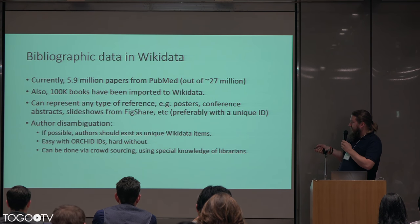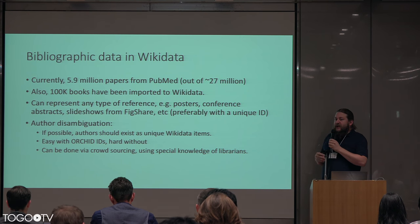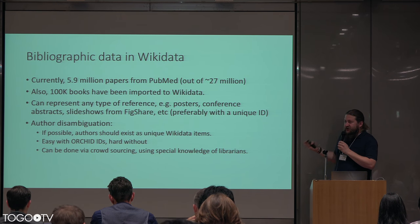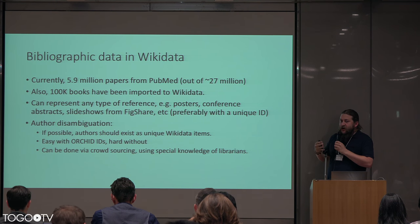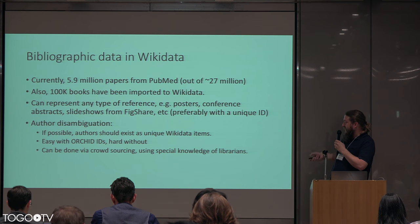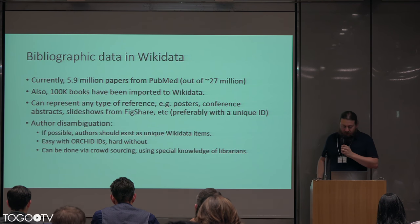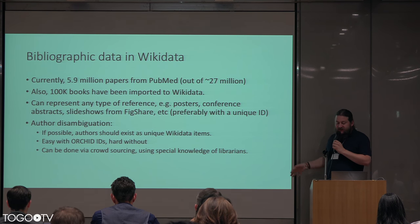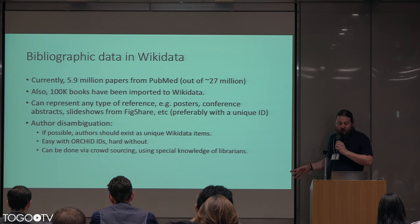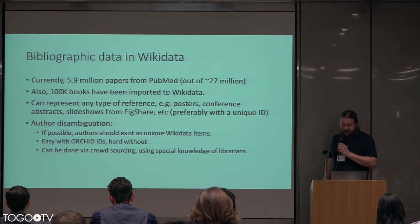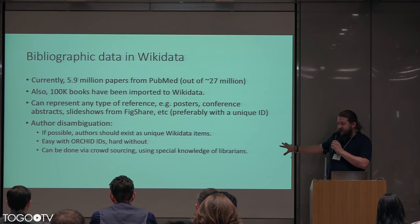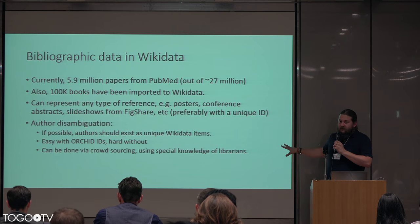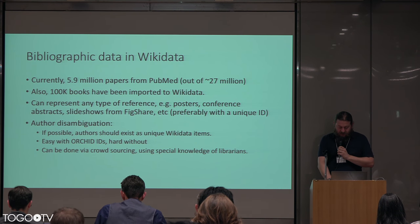One thing which can also be done in Wikidata is author disambiguation. If possible, authors should exist as unique items in Wikidata. That's currently not always possible because many author names in PubMed are just strings, making it really hard for common names to identify who that person actually was. But if a person has an ORCID ID, that's relatively easy. There is a big incentive in the Wikidata community to do author disambiguation as a community project — especially getting librarians on board to dig into institutional histories and see who authored which papers. This can really go beyond what PubMed can do for us right now.